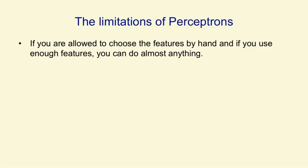The reason that neural network research came to a halt in the late 1960s and early 1970s is that perceptrons were shown to be very limited, and we're now going to understand what those limitations are.